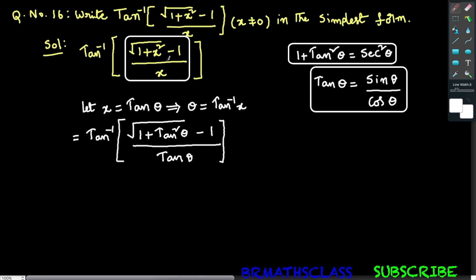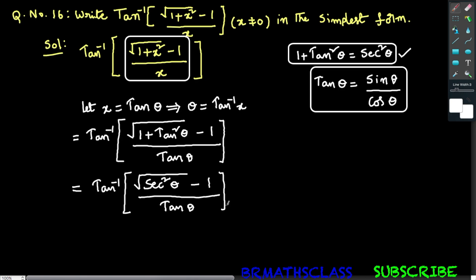In the given expression, wherever x appears, substitute tan theta. Now we will simplify this. That equals tan inverse of — from trigonometric identities, 1 plus tan squared theta is secant squared theta. So in place of 1 plus tan squared theta, write secant squared theta. That equals tan inverse of square root of secant squared theta minus 1, divided by tan theta.